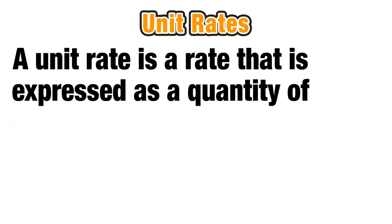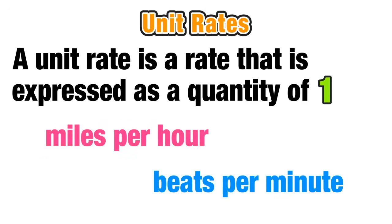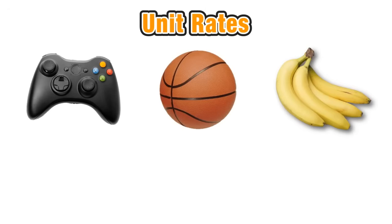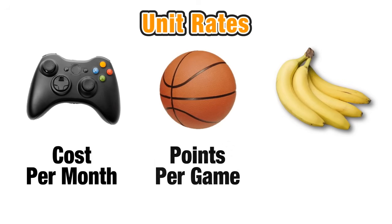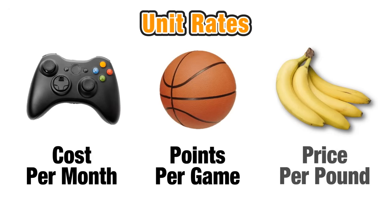A unit rate is a rate expressed as a quantity of one. Miles per hour is the number of miles traveled in one hour, and beats per minute is the number of heartbeats in one minute. We see unit rates all the time — a few examples include the cost per month for a video game membership, the average points per game scored by a basketball player, and the average price per pound of bananas.